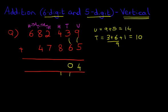Next we are going to add the hundreds. So we have four plus eight plus the one we have carried over. Four plus eight is twelve plus the one is thirteen. So let's write that down. Thirteen.